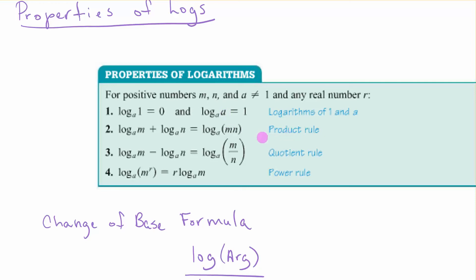Product rule says if you have two individual logs with the same base, you can write them as a single log of a product, log base A of M times N. If you have two separate logs subtracted and the bases are the same, you can write it as a single log of a quotient. The power rule says log base A of M to the R, the power can come to the front.